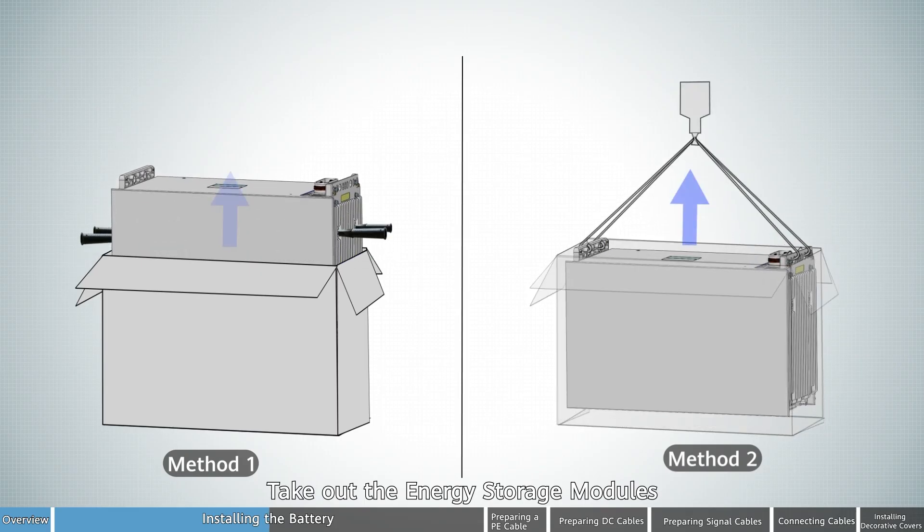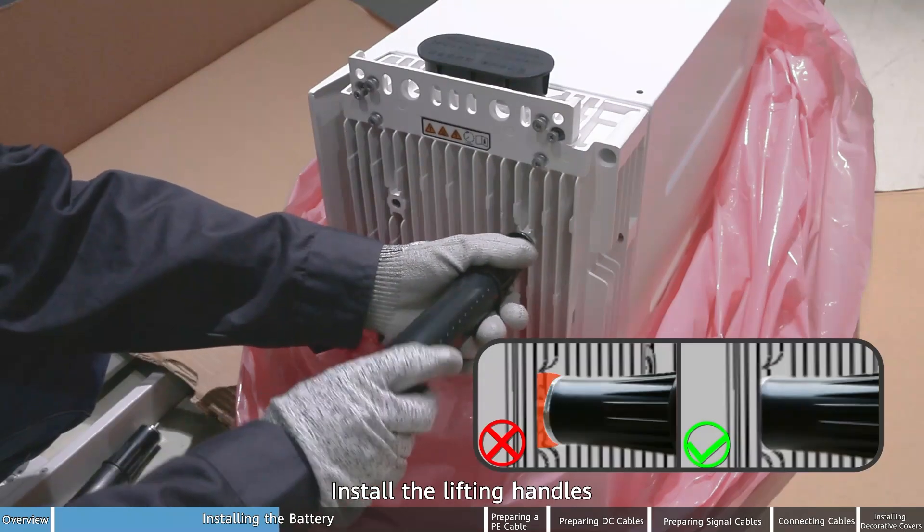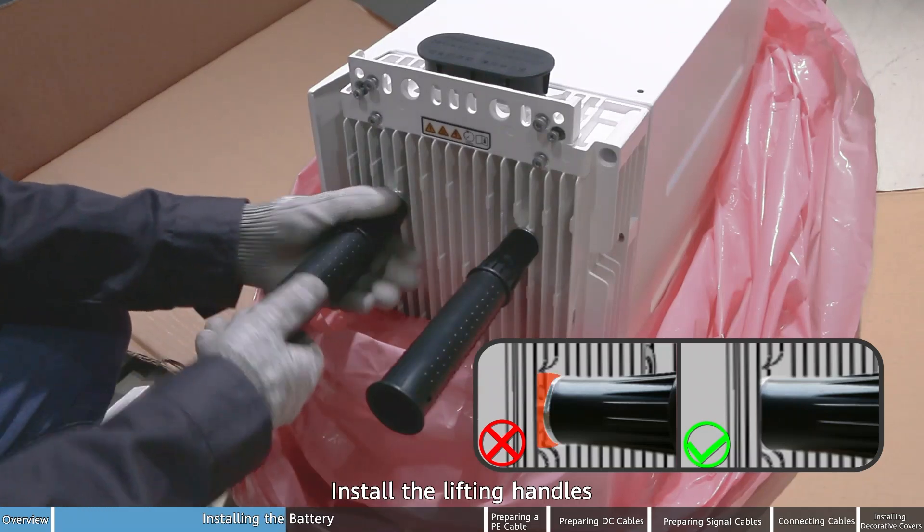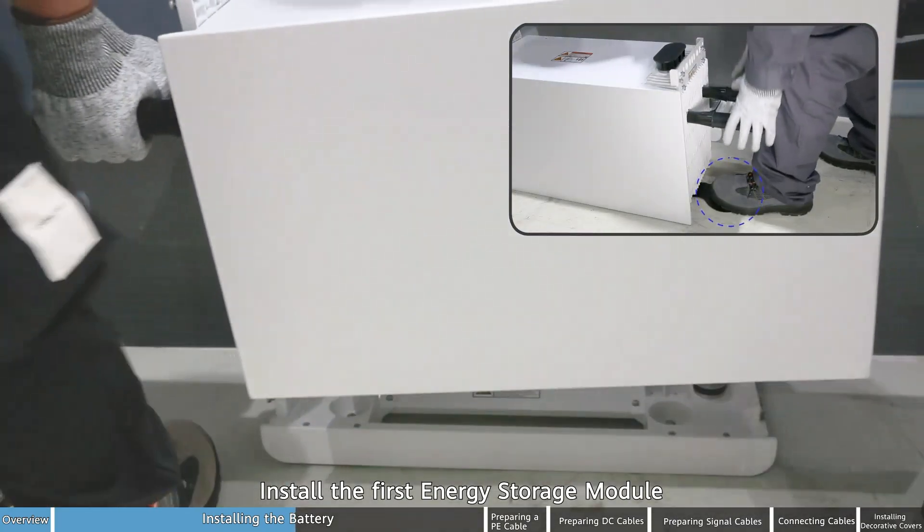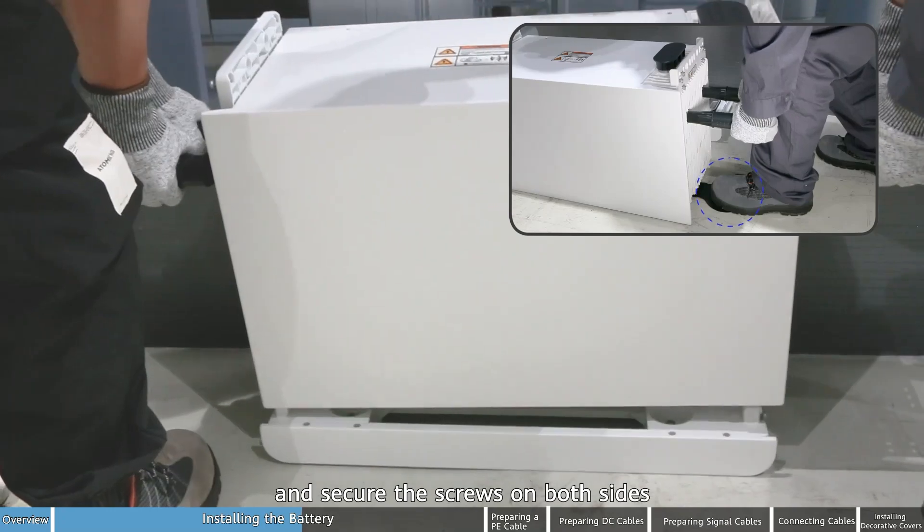Take out the energy storage modules. Install the lifting handles. Install the first energy storage module and secure the screws on both sides.